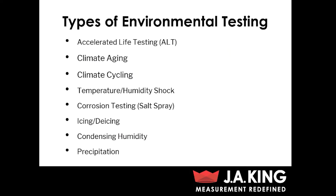Going through the different types of environmental testing we're going to touch on today: we've got accelerated light testing, also referred to as ALT testing; climate aging and cycling; temperature and humidity shock; corrosion testing, specifically salt spray testing; icing and de-icing testing; condensing humidity; and then various forms of precipitation testing.